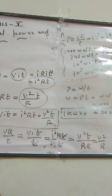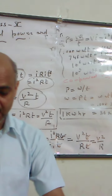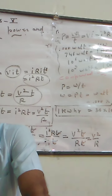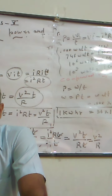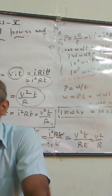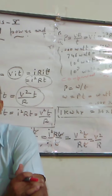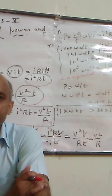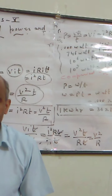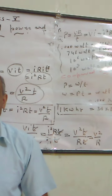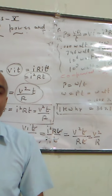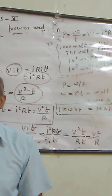A few more important things: the power ratings of some common electrical appliances. We have seen that on electric appliances it is written, for example, 220 volts and 100 watts. This simply means that if you operate the appliance at 220 volts, the power consumption will be only 100 watts.